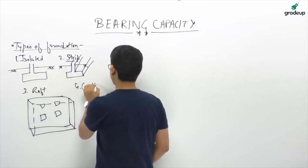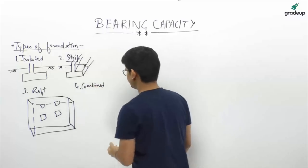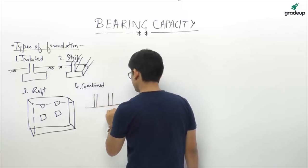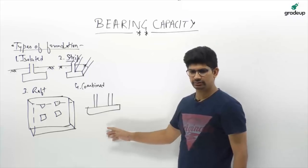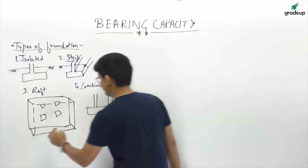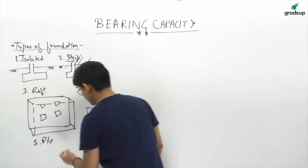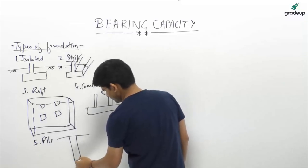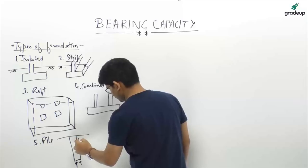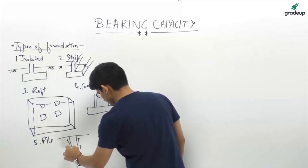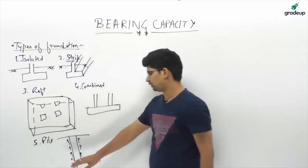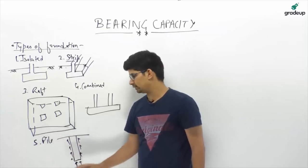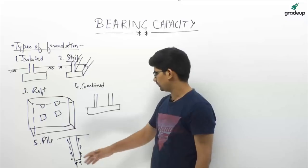Fourth is combined footing. In combined footing, there will be multiple columns in a single footing. For deep foundation, there is piling. Piles resist load from the tip and also due to friction. Depending on various mechanisms, piles are segregated into end bearing piles and friction piles. These types come under the deep foundation chapter.